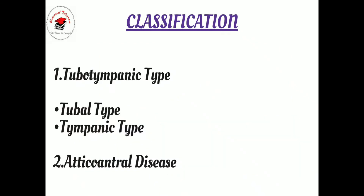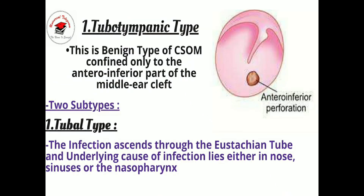There is a classification of CSOM. CSOM is mainly classified into two types: the first one is the tubotympanic type and the second one is the atticoantral disease. Moving forward to the first type — the tubotympanic type — it is further divided into two subtypes: the tubal type and the tympanic type.